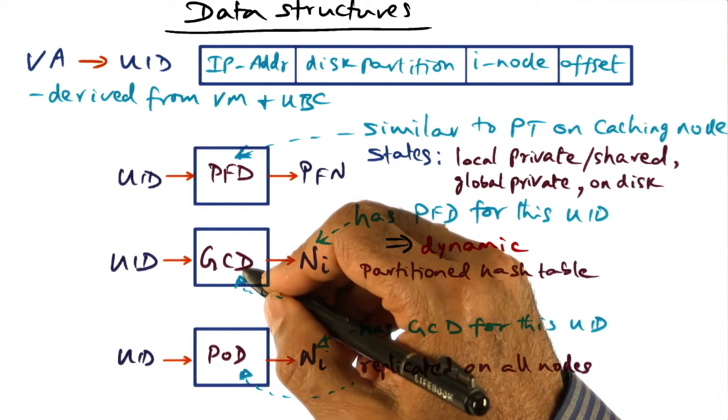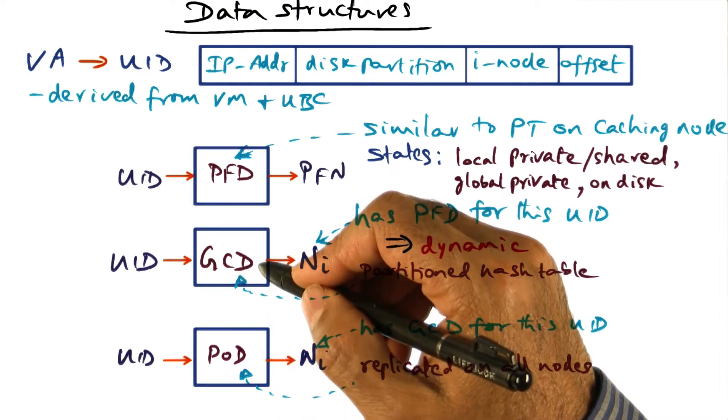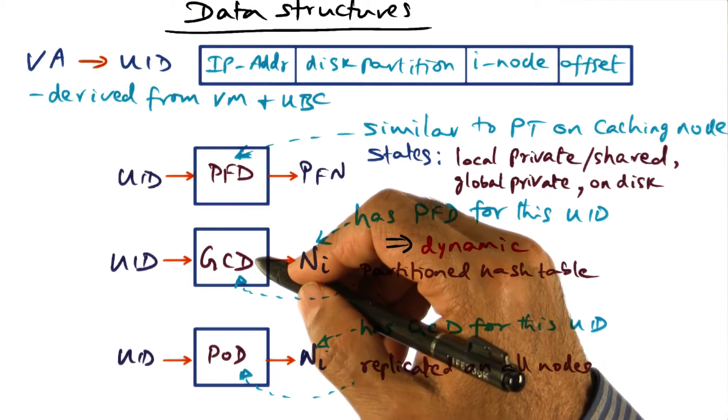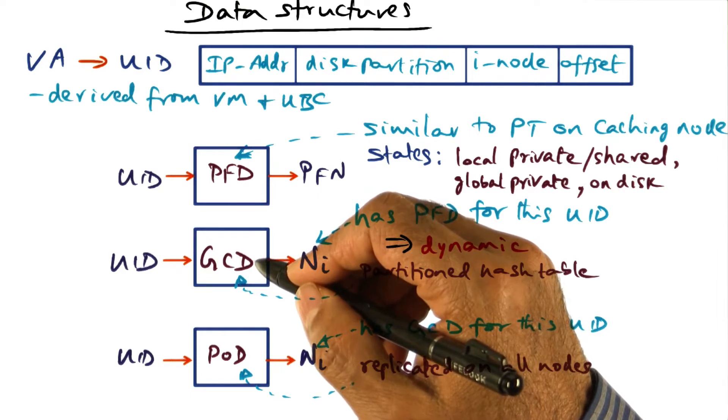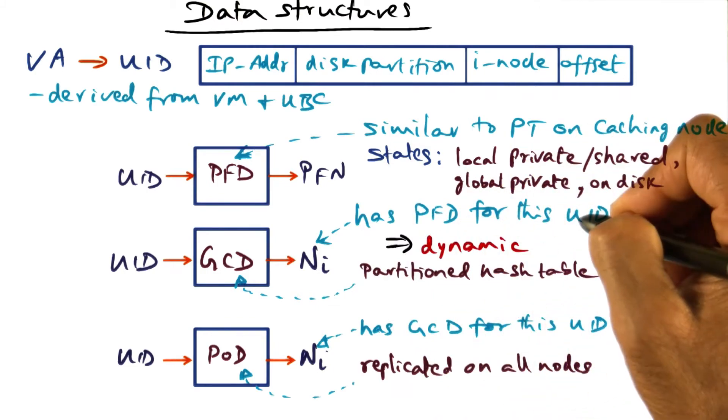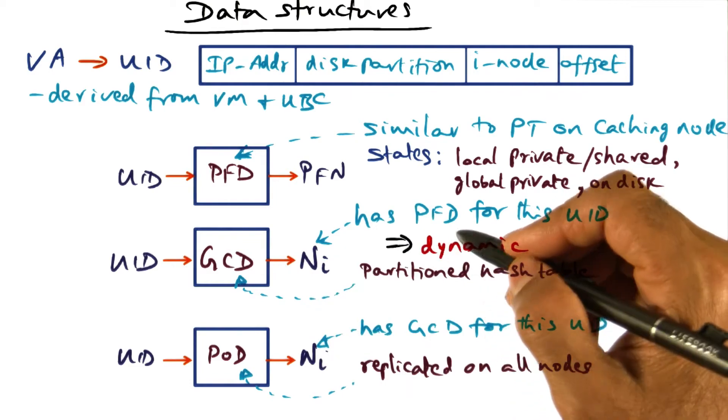And that data structure is this global cache directory, GCD. So GCD is a hash table. It's a cluster-wide hash table, a distributed data structure. And the role that GCD performs is, given a UID, it'll tell you which node has the PFD that corresponds to this UID.